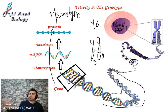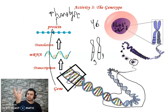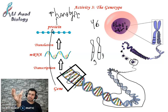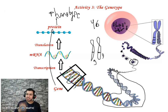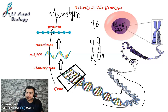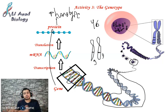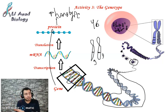For example, if I say gene of color of eyes — it can give black, green, blue, honey, grey, etc. So this one gene has many different phenotypes, giving several different forms.